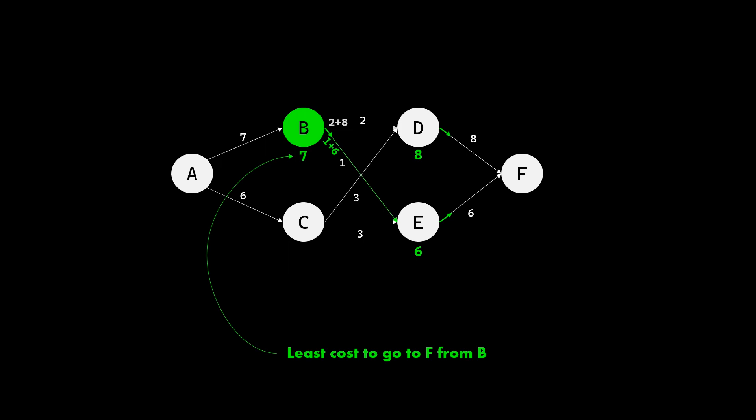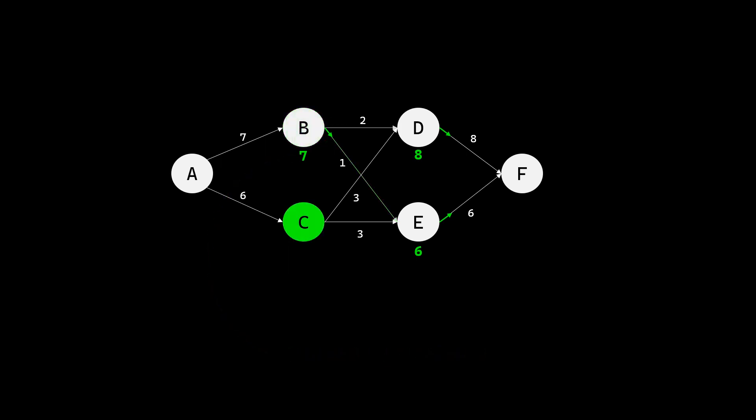These little arrows are going to be important in the second step of this algorithm in navigating the optimum path. They are telling us which direction to head to for the minimum cost. Similarly, for state C, the optimum way forward is towards E, with the least cost of 3 plus 6, which is 9.